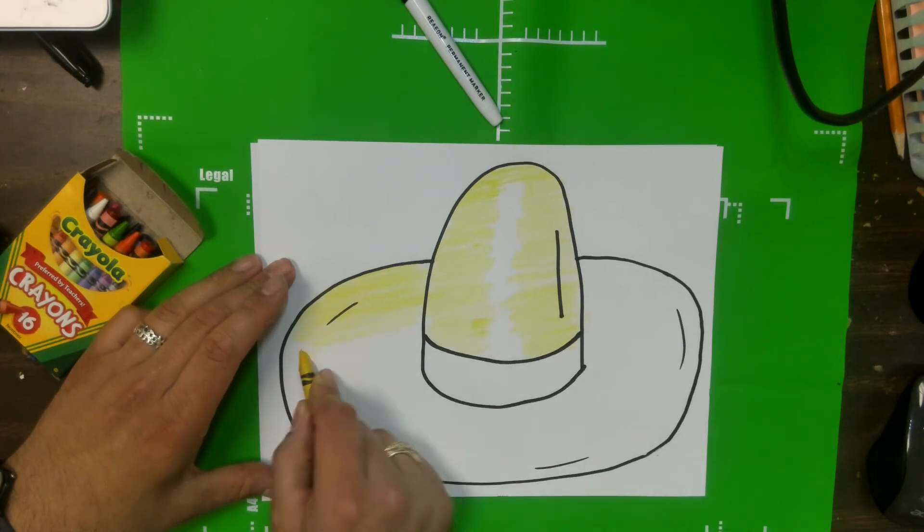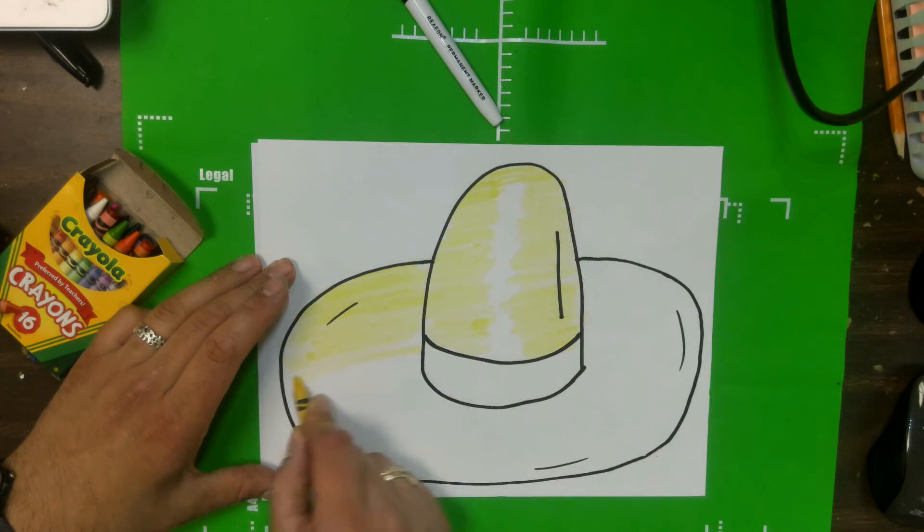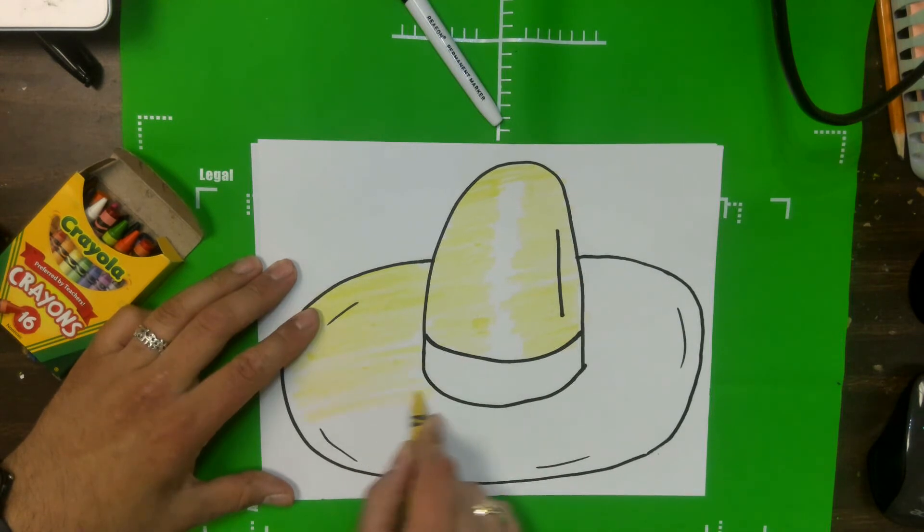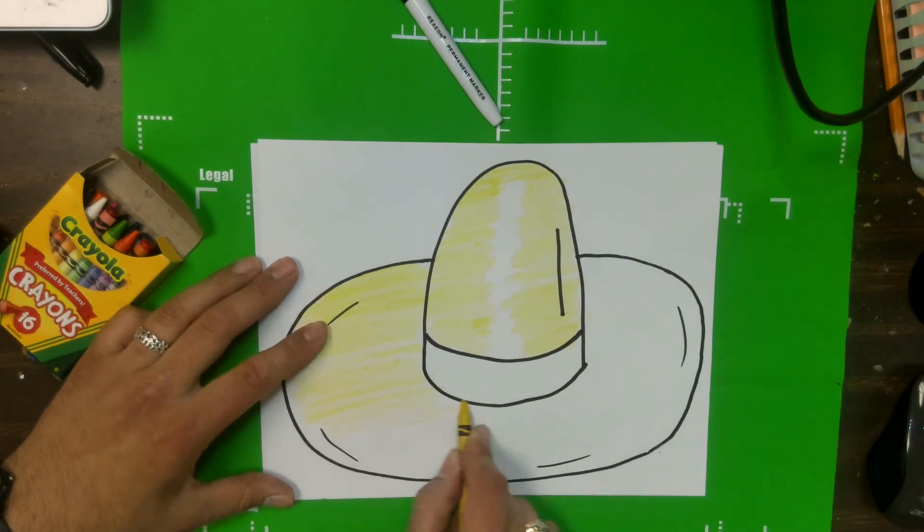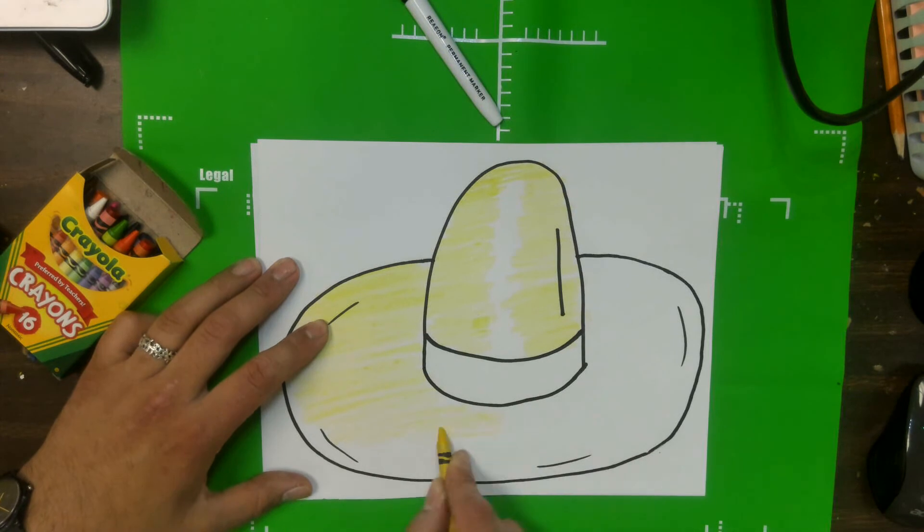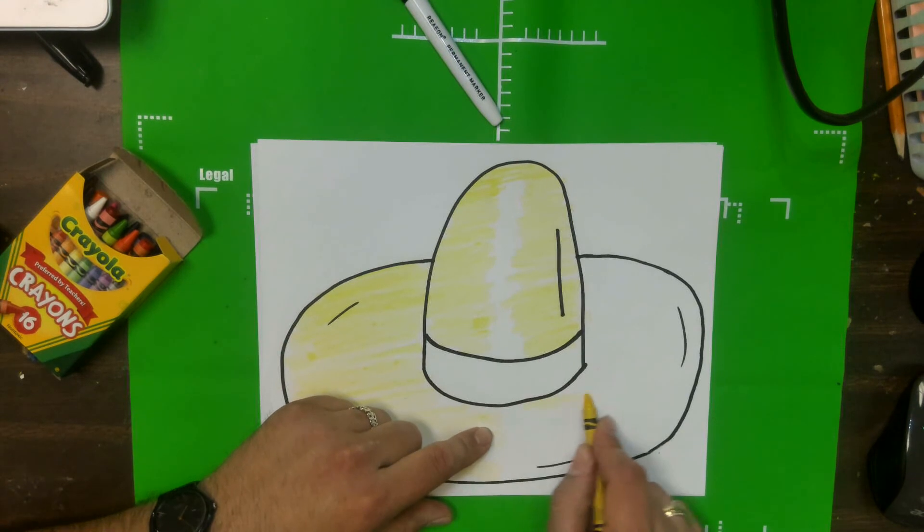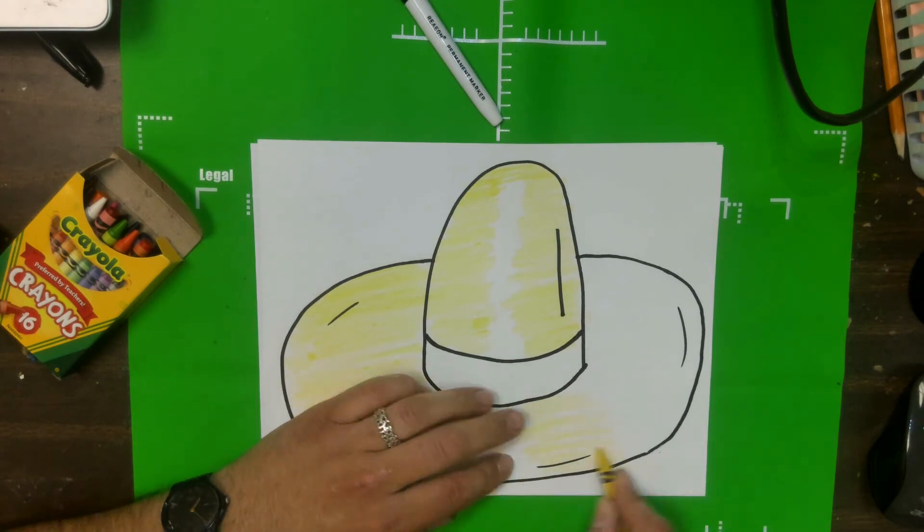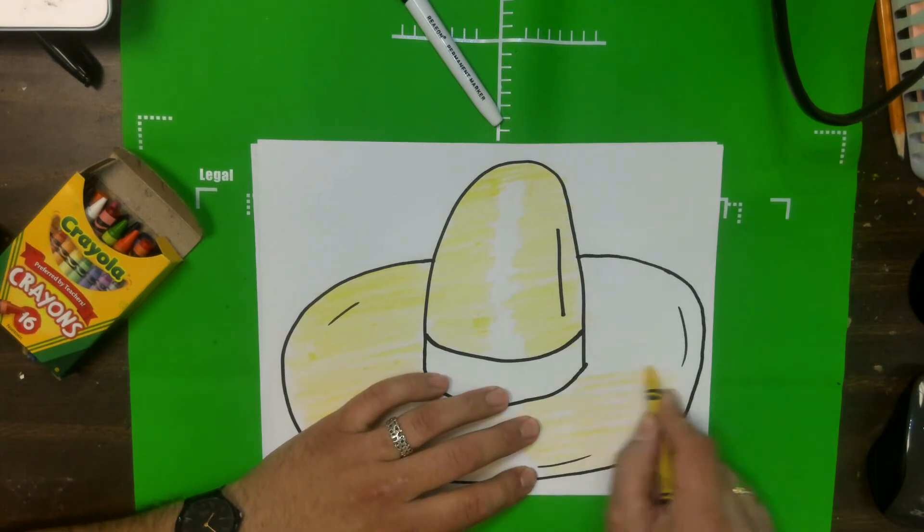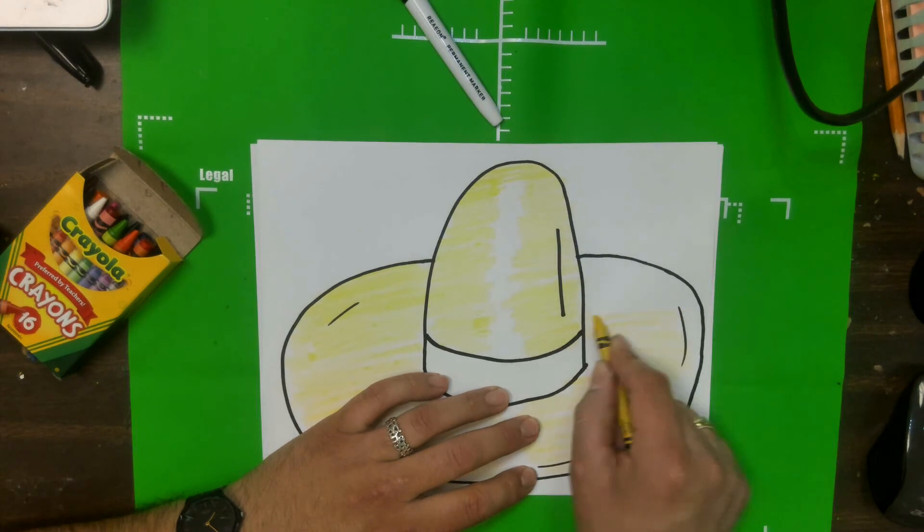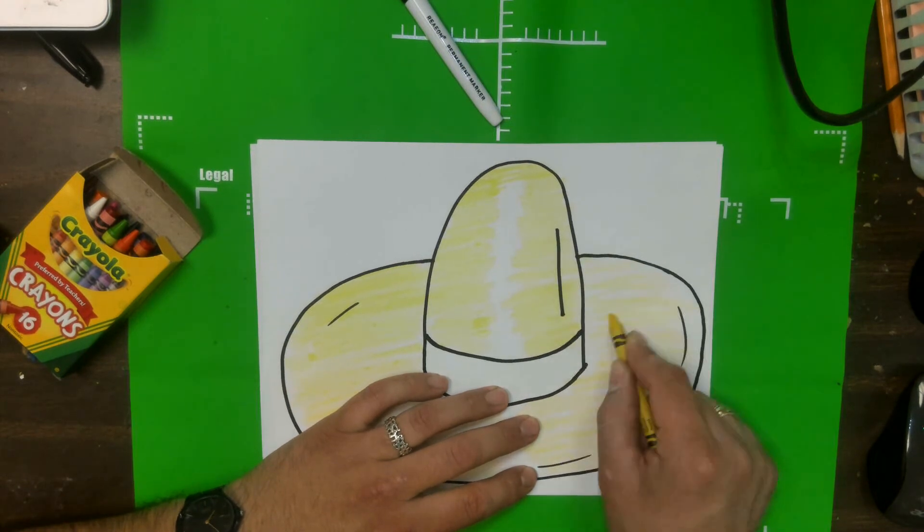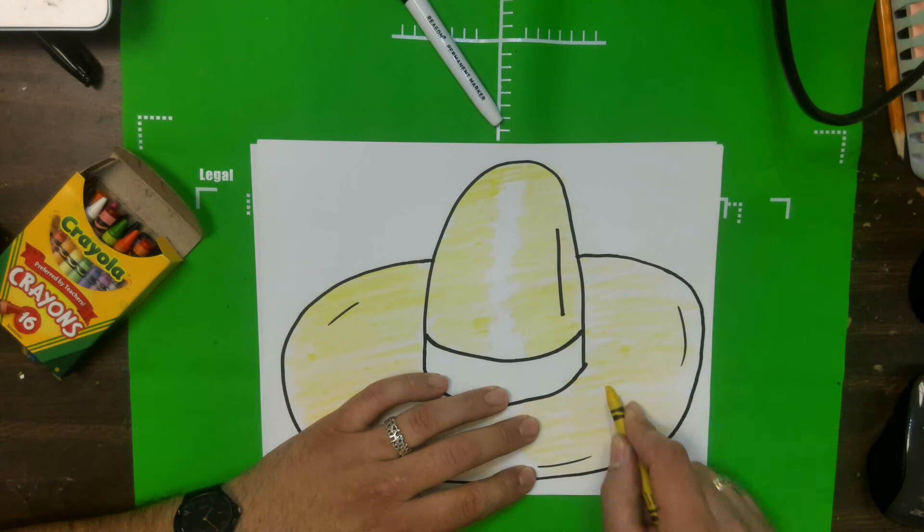And this next part, I'm just going to go ahead and just color it back and forth like this. It's something super easy. Over here, I'm going to try and do the same thing. I'm going to leave some white right here. Kind of skip over that and go around like this. Just like that.